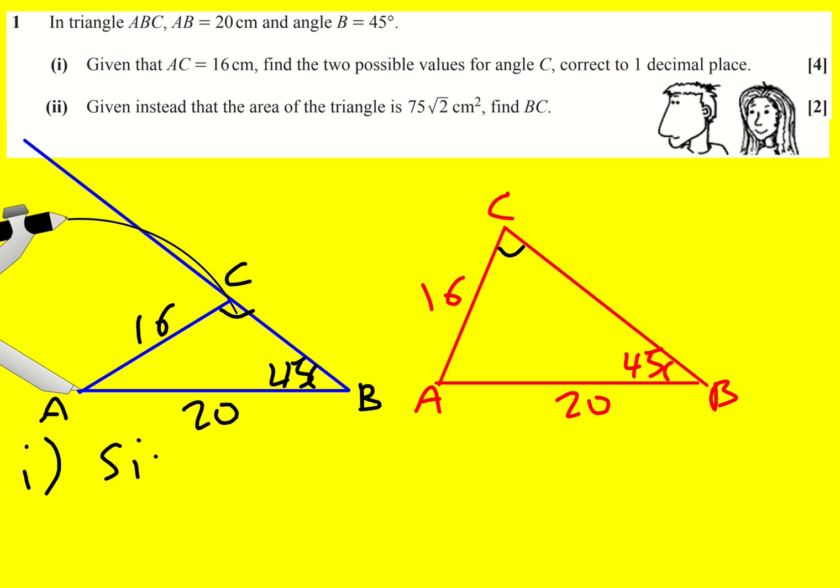And we can write down that sine of C divided by 20 is equal to sine 45 divided by 16. Rearranging gives sine C equals 5 root 2 over 8.